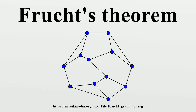Frucht's theorem is a theorem in algebraic graph theory, conjectured by D.E. Acutenis-Kunig in 1936 and proved by Robert Frucht in 1939. It states that every finite group is the group of symmetries of a finite undirected graph.